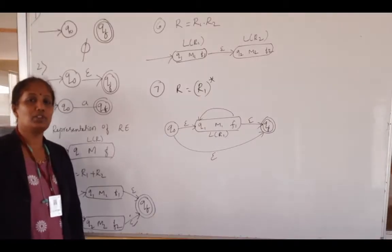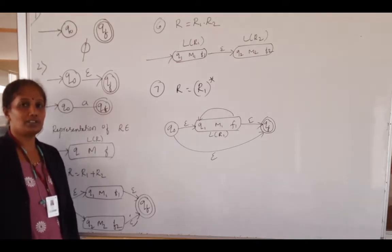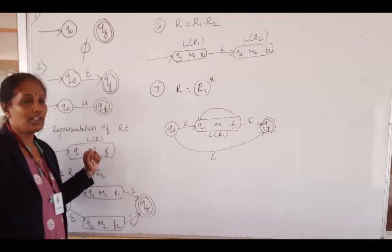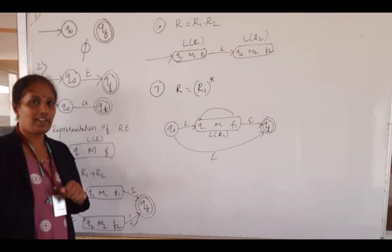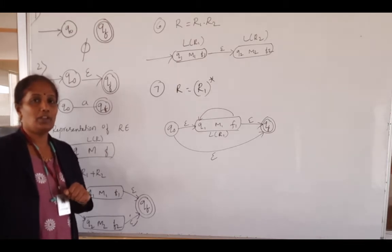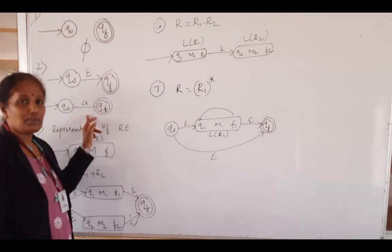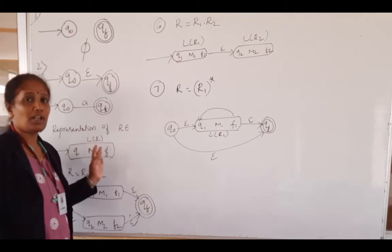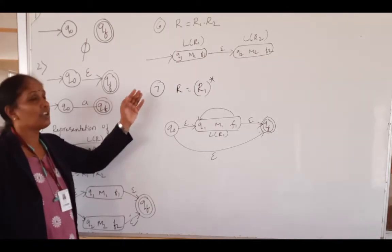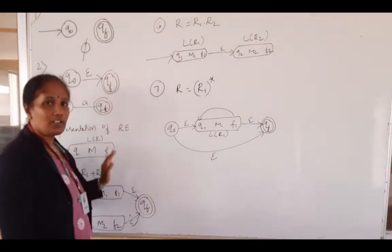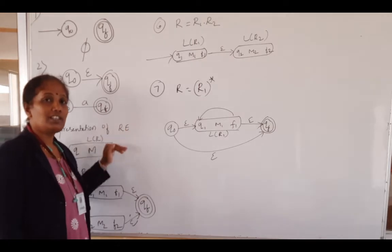Hello everyone, welcome back. In the last video we had seen how to write a regular expression for a given statement. Today we see how to construct a finite state machine for a given regular expression. According to Kleene's theorem, there exists a finite state machine for every regular expression. A regular expression may contain null, epsilon, a single character, a combination of two expressions, a union of two expressions, or a Kleene closure.